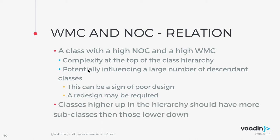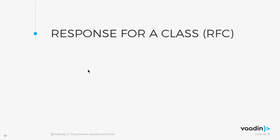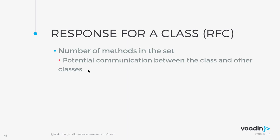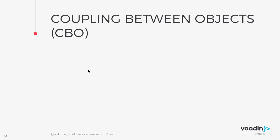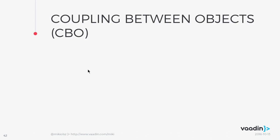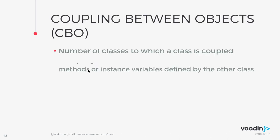The fourth metric is Response for a Class (RFC), which is about communication between classes — the number of methods in the response set. With intensive communication, there can be more faults, and you may want to test more extensively. It is much harder to understand, debug, and test. The fifth metric is Coupling Between Objects (CBO) — the number of classes to which a class is coupled, meaning how many other classes it interacts with.